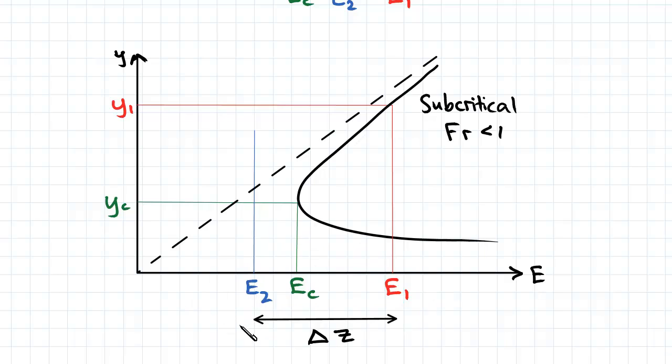And we call this situation where e2 is less than eC a choking flow. Clearly there are no points for e2 less than eC that correspond to a value for y on the curve. Because it's completely off the curve, off the graph, so that doesn't have a y value.